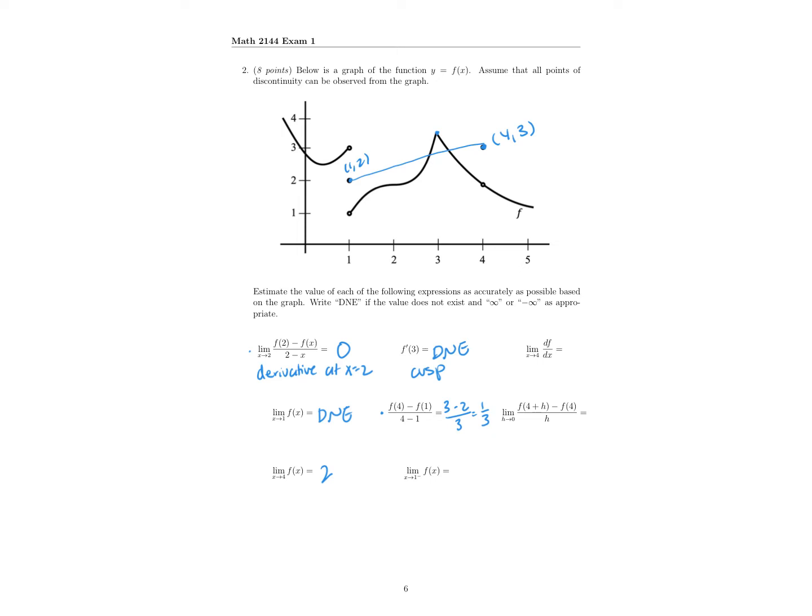On to the next one — the limit as x is approaching 1 from the left side. We already discussed that the two-sided limits are not equal to each other, but here we have the left-sided limit only. So from the left side, it's approaching 3.